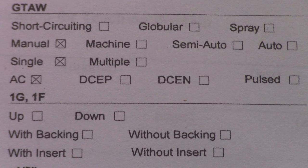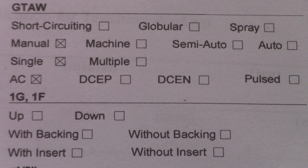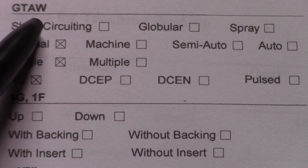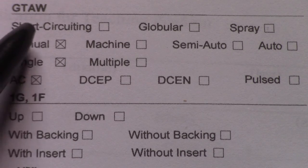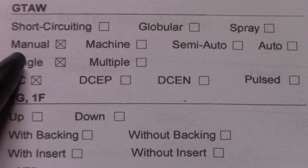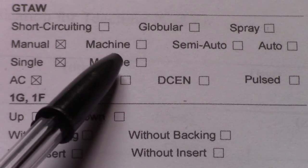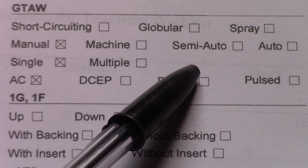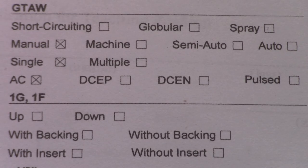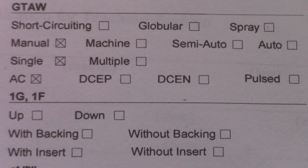I just wanted to show you a section out of a procedure we did for a company that was doing TIG — you can see GTAW there. And down here, you can see they want to know: manual, machine, semi-automatic, or automatic. So that's on actual welding procedures.